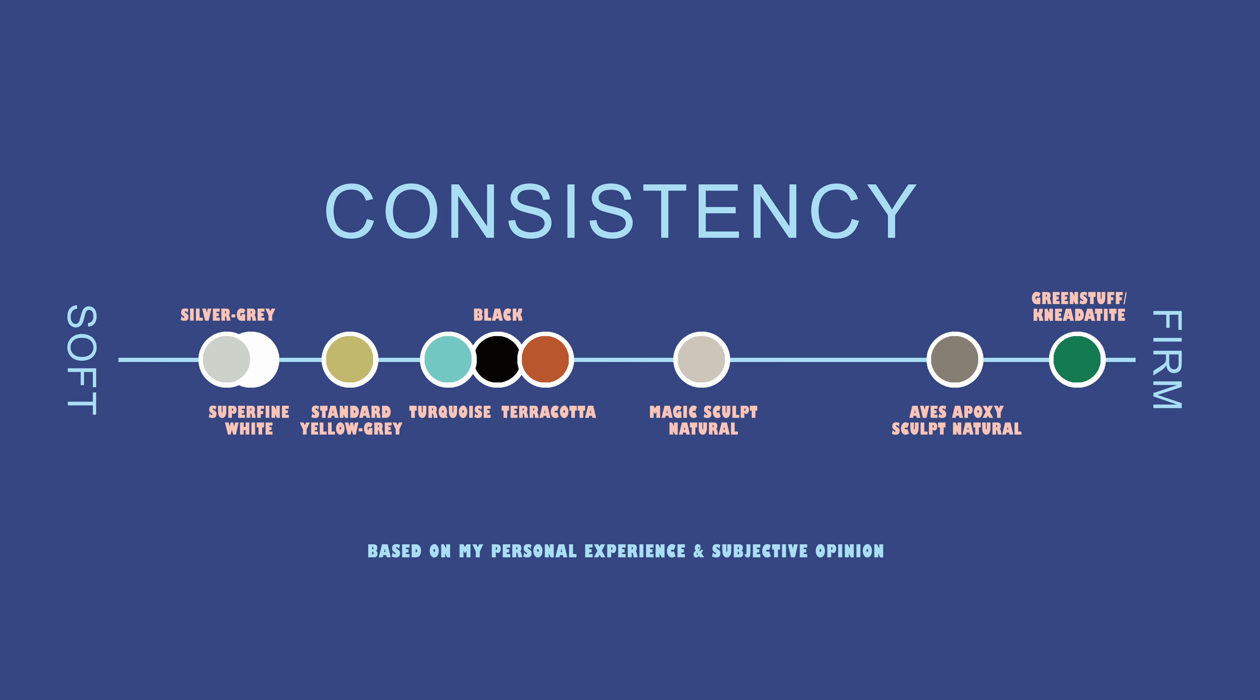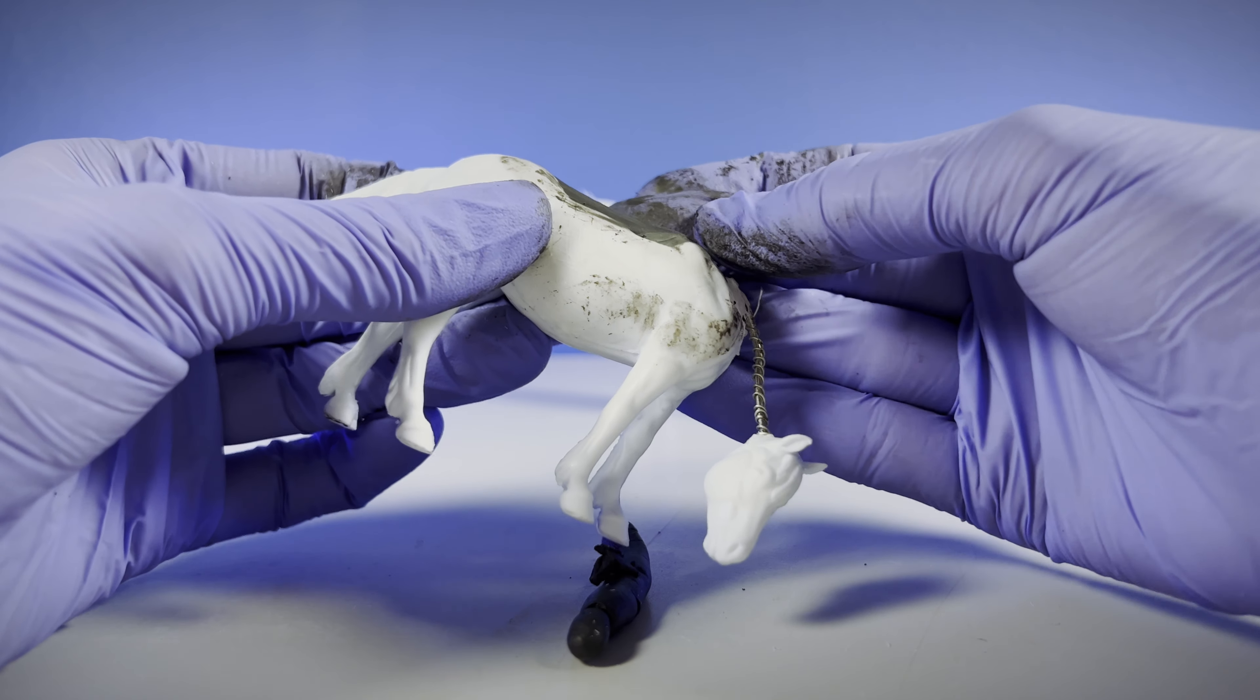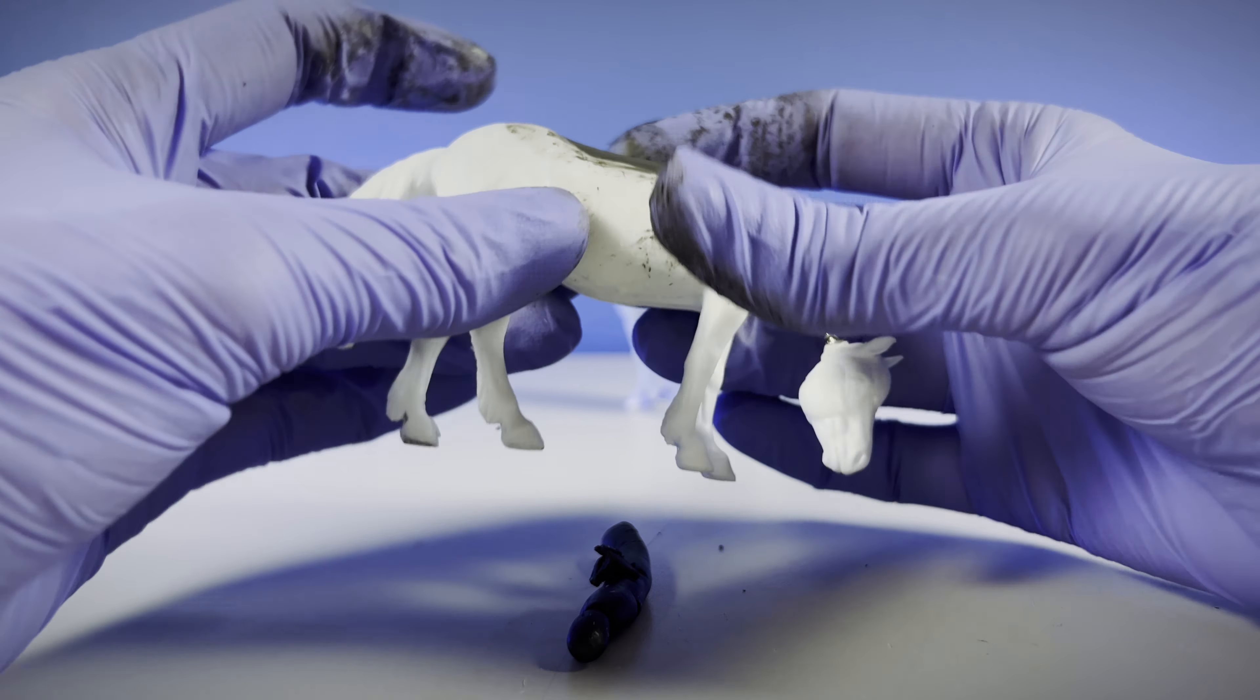Every color after terracotta just gets softer, with white and silver gray being the softest. If you're used to Magisculpt or Aves, these colors will feel very soft.